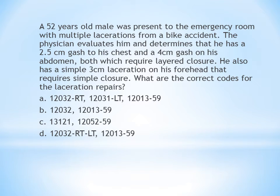Moving on to the second question. A 52-year-old male presented to the emergency room with multiple lacerations from a bike accident. The physician determines he has a 2.5 cm gash to his chest and a 4 cm gash on his abdomen, both requiring layered closure. He also has a simple 3 cm laceration on his forehead requiring simple closure. What are the correct codes for the laceration repair? The treatment done here is repair or closure or suture. When you get a question on repair, identify the type of repair first.